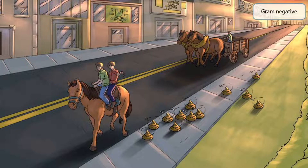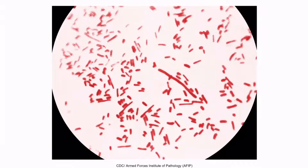Just like in our other gram-negative videos, notice that we've made the sunset appear red. This is to help you remember that Shigella is gram-negative. This is a gram stain of Shigella — notice that it's pink or red appearing under the microscope and is rod-shaped, which is why it's classified as a gram-negative bacillus.